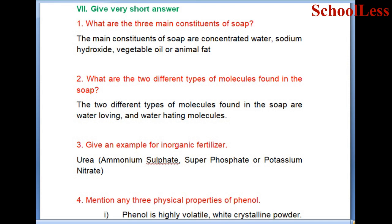Question 7 - Give very short answers. Question 1: What are the three main constituents of soap? The main constituents of soap are water, sodium hydroxide, and vegetable oil or animal fat. Question 2: What are the two different types of molecules found in soap? They are water-loving and water-hating molecules.